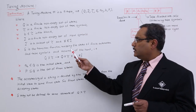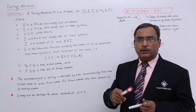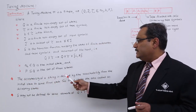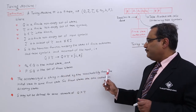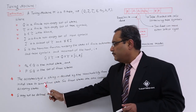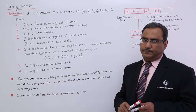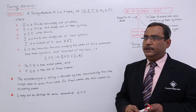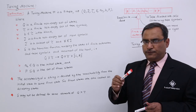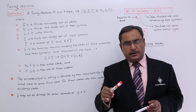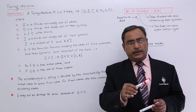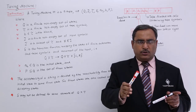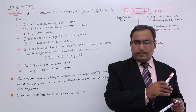The conception will be more clear when we go through an example. The acceptability of a string is decided by reachability from the initial state to some final state, so final states are also called accepting states. If, for a certain input, we can reach from the initial state to the final state, then the input string has been accepted by the Turing machine.